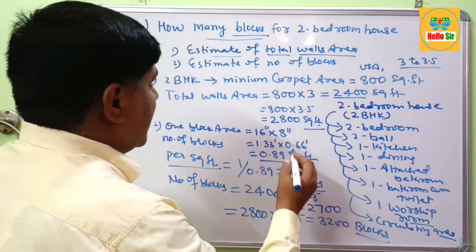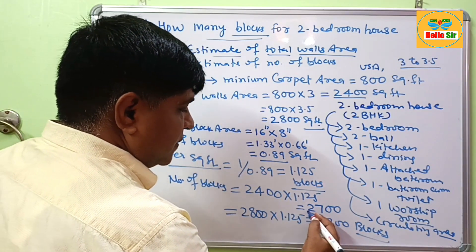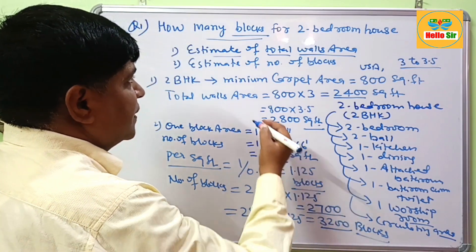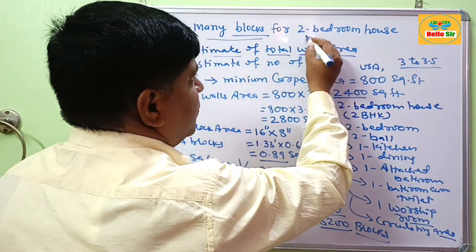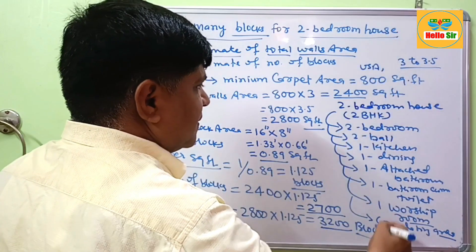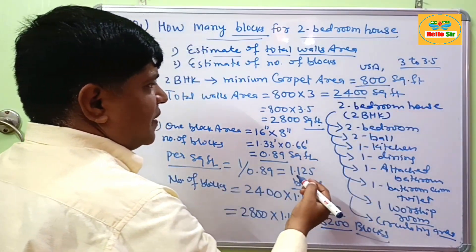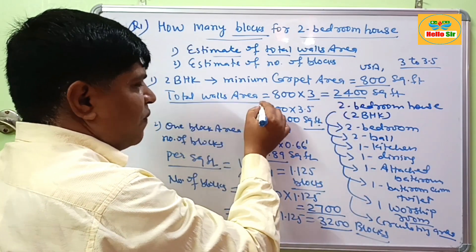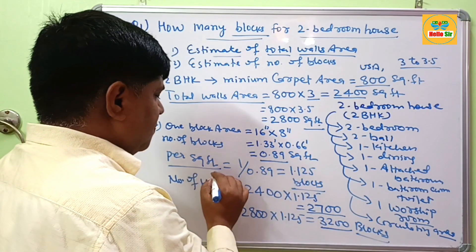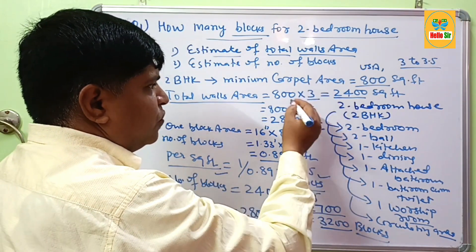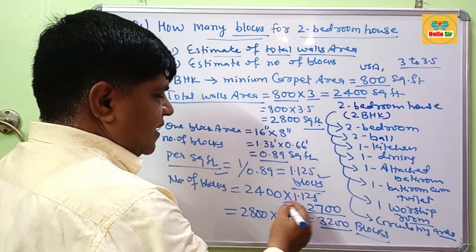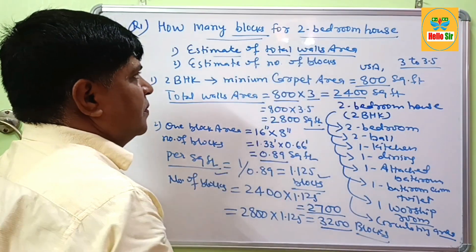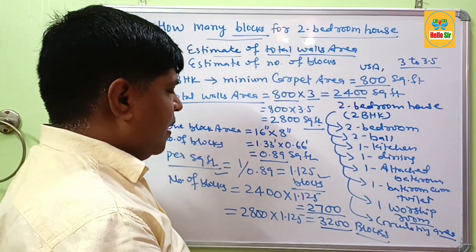So approximately 2,700 to 3,200 concrete blocks are required to build a two-bedroom house. Remember: first determine the carpet area, multiply by 3 to 3.5 to get total wall area, then calculate blocks per square foot (1.125), and multiply by wall area to get the total number of concrete blocks required. Thank you.